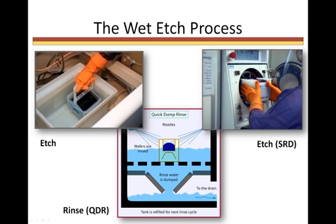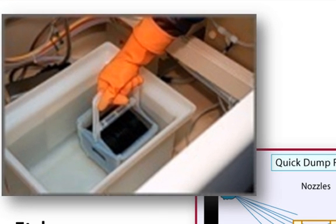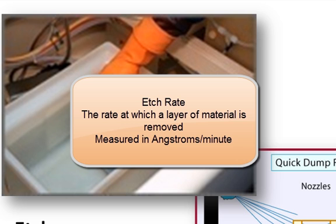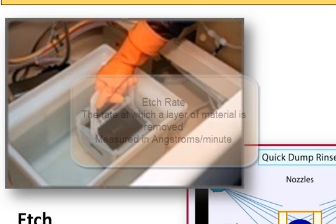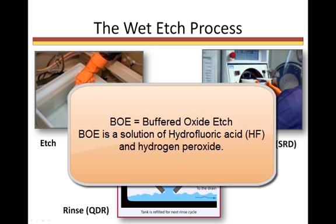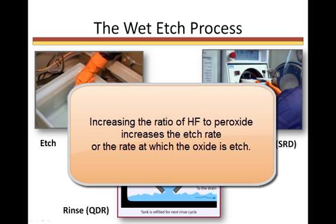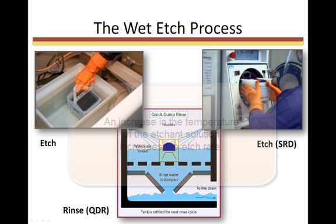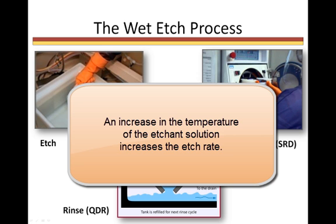Wet etch is performed in an immersion tank containing the etchant solution. The wafers are placed in a wafer carrier, known as a boat, and this carrier is lowered into the tank containing the heated etchant solution. The wafers are left in the solution for a calculated amount of time. Two critical parameters monitored during wet etch are the concentration of the solution and its temperature. Both directly affect the etch rate. An increase in either parameter increases the etch rate. For example, a buffered oxide etch is a solution of hydrofluoric acid, or HF, and hydrogen peroxide. An increase in the ratio of HF to peroxide would increase the rate at which the oxide is etched. An increase in temperature would also increase the etch rate.